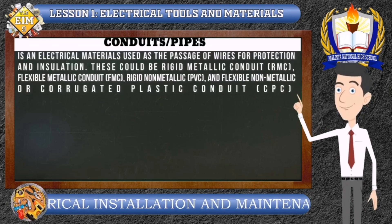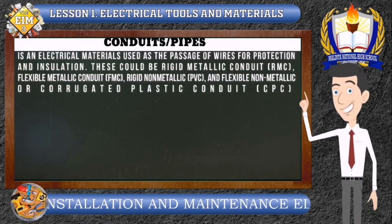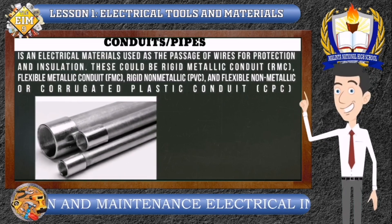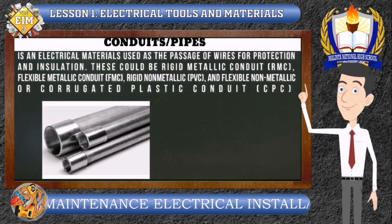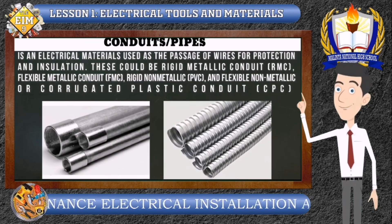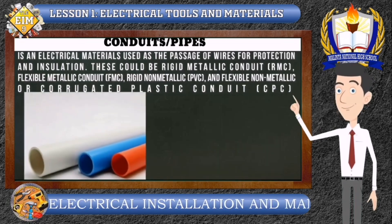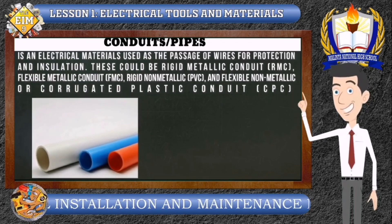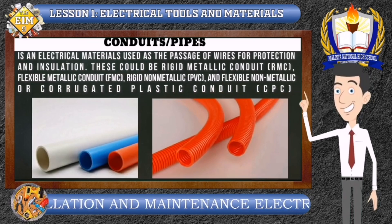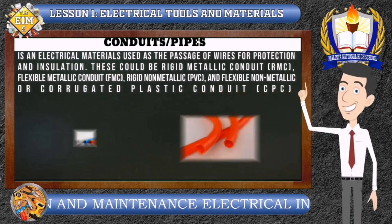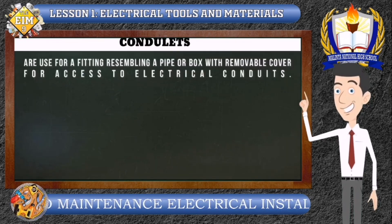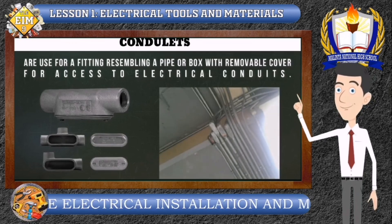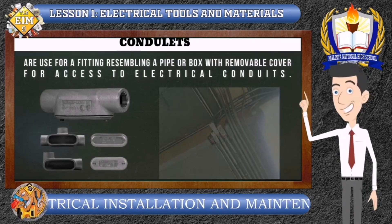Conduits or Pipes: A conduit is an electrical material used as the passage of wires for protection and insulation. This could be Rigid Metallic Conduit (RMC), Flexible Metallic Conduit (FMC), Rigid Non-Metallic Conduit (PVC), or Flexible Non-Metallic or Corrugated Plastic Conduit (CPC). Conduit fittings resemble a pipe or box with a removable cover, used for access to electrical conduits.